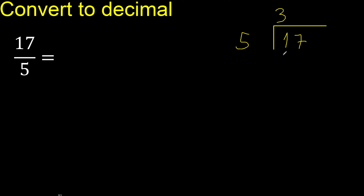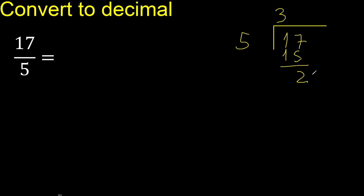Multiply by 3 is 15 — is not greater. Subtract, remainder is 2. There is no number that goes down, therefore we continue. Always complete with 0 here — complete with a decimal point.